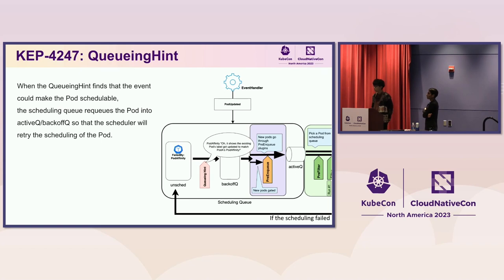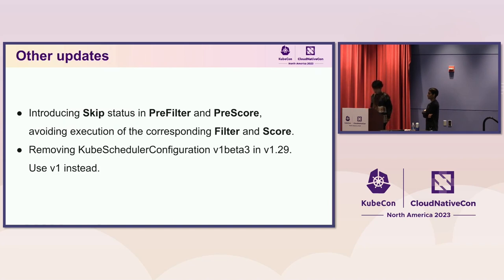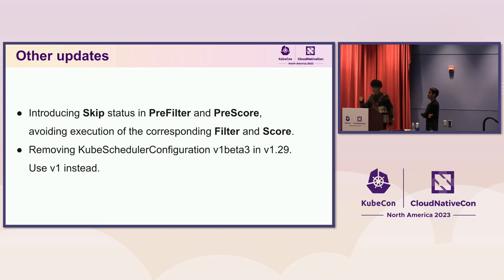We aim to avoid wasteful scheduling cycles by retrying scheduling smartly via queuing hints. We started deployment of queuing hints in 1.28, and some entry plugins supported queuing hints in 1.29. We also introduced skip status in pre-filter and pre-score to avoid execution of corresponding filter and score phases. For example, when a pod has no pod affinity requirement, the pod affinity plugin can return skip in pre-filter. Also, scheduler configuration v1beta3 is removed in 1.29, so please move your configuration to v1.